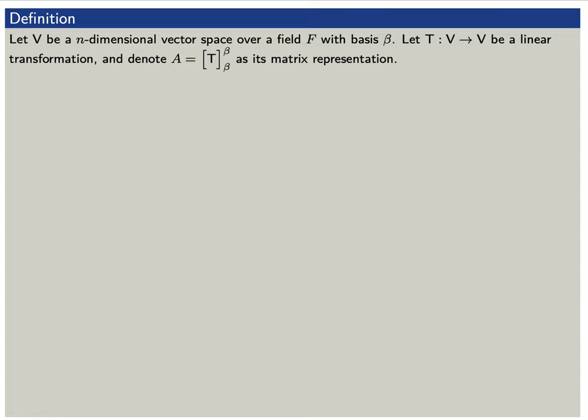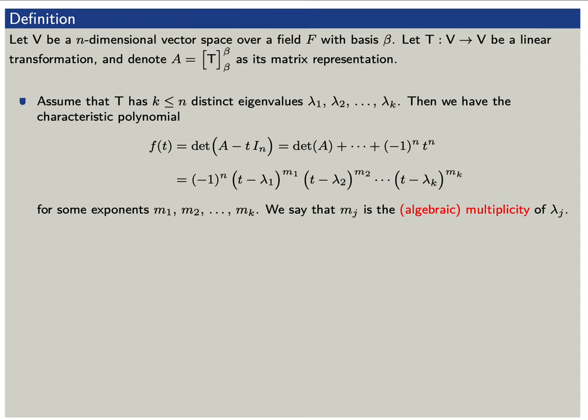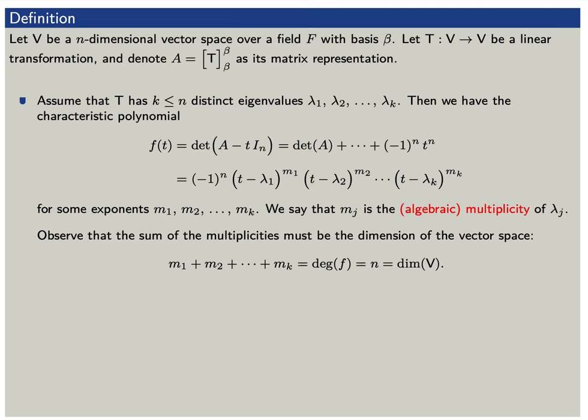Let's assume that t has k distinct eigenvalues, lambda 1 through lambda sub k. This means that our characteristic polynomial f of t factors as t minus lambda 1 to some exponent m sub 1, times t minus lambda sub k to some exponent m sub k. The exponents m sub j are the multiplicities of the eigenvalues lambda sub j. Observe that the sum of these multiplicities must equal the dimension of the vector space — that is, m1 plus m2 plus m sub k must equal n, the degree of f.